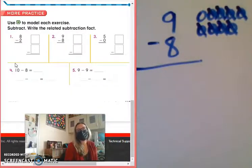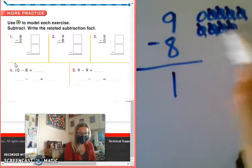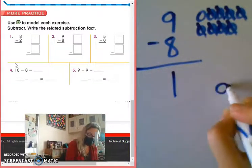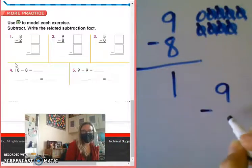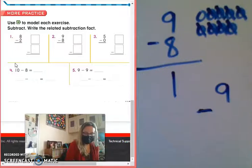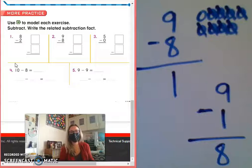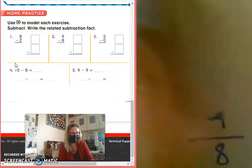So how many did we take away 8? How many does that leave us with? 1. So our parts are 8 and 1. So what would the flip-flop or the other related fact be? Not plus. Take away. 9 take away 1 equals 8. Beautiful.